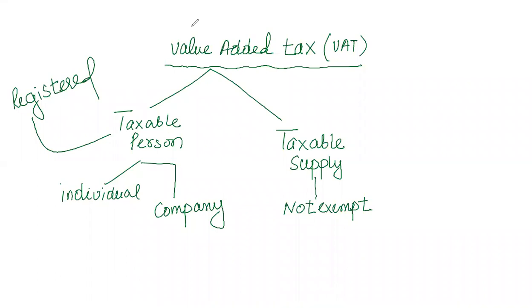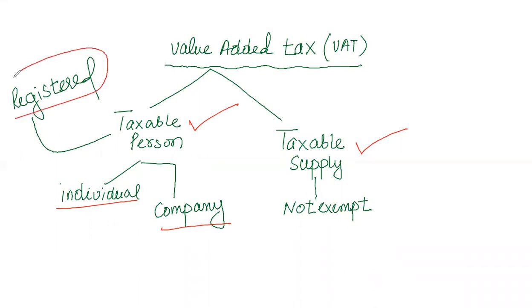VAT is applicable on the taxable supply by a taxable person. A taxable person may be an individual or a company dealing with taxable supply. In order to apply VAT, the taxable person must be tax registered with HMRC. Otherwise, if a business or person is not tax registered, they cannot charge VAT from their customers.